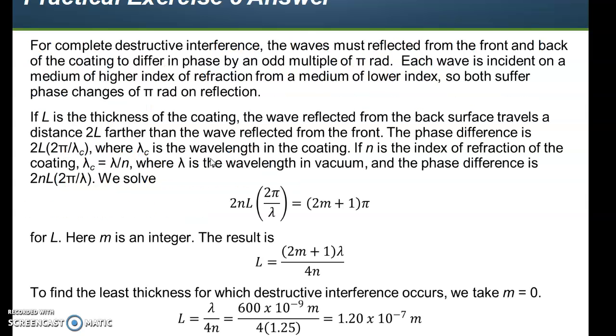For complete destructive interference, the waves must be reflected from the front and back of the coating and differ in phase by an odd multiple of pi radians. Each wave is incident on a medium of higher indices of refraction from a medium of lower indices, so both suffer phase changes of pi radians on reflection. If L is the thickness of the coating, the wave reflected back travels a distance of 2L farther than the wave reflected on the front. The phase difference is 2L times 2 pi over lambda C, where lambda C is the wavelength in the coating. Lambda coating is the wavelength divided by the index of refraction. The phase difference is 2NL, the thickness of the coating, times 2 pi over lambda.